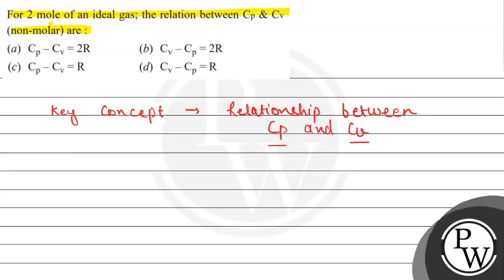What we have to find out is the relationship between heat capacity and the change in temperature: Q = C·ΔT. Here Q is the heat gained or released in the process, and C represents the heat capacity, defined as the amount of heat to be supplied to an object to produce a unit change in its temperature.